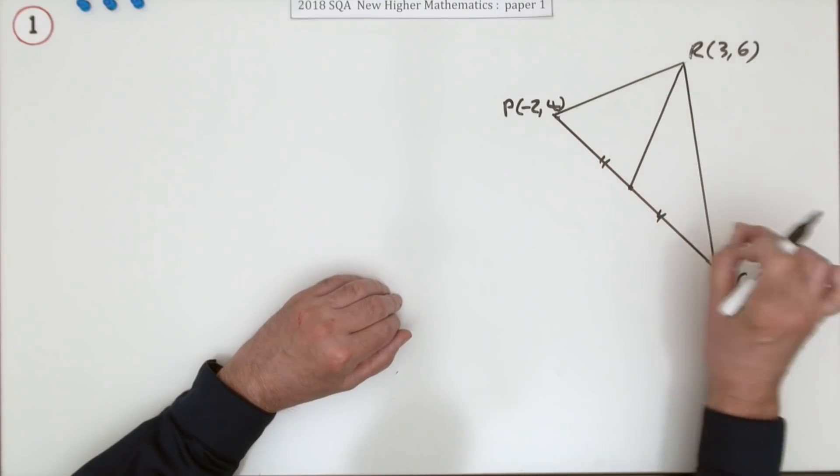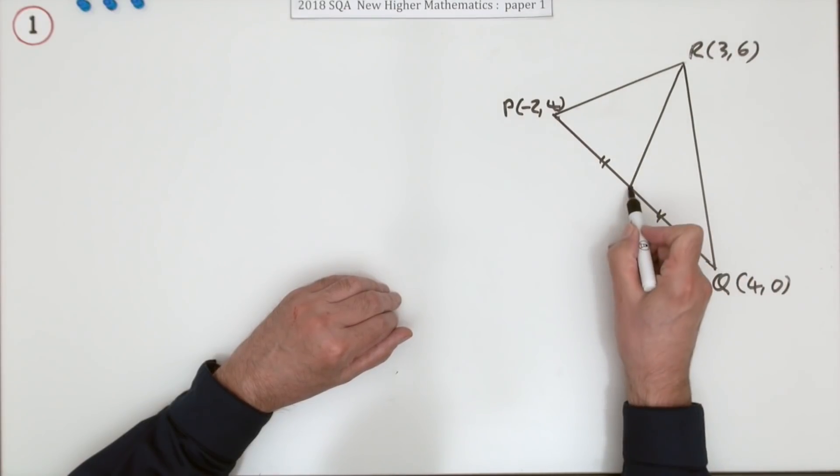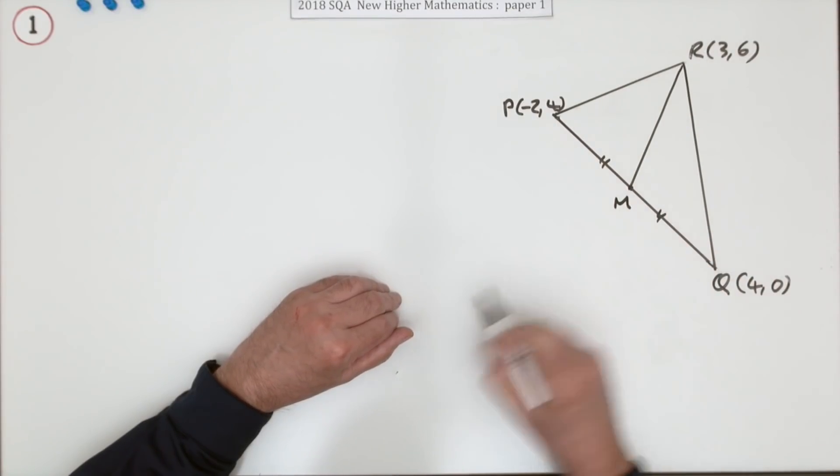How much does it rise for every step along? Well, you can get that if you know another point on it, and you will in this case, because you'll know this midpoint. It'll give it a name, M.